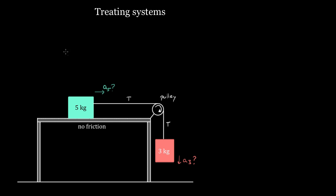We want to find acceleration, and you know how to find acceleration: we're gonna use Newton's second law, so the acceleration in a given direction equals the net force in that direction divided by the mass. Let's pick the five kilogram mass. The acceleration of the five kilogram mass equals the net force on the five kilogram mass divided by its mass. Since this box is accelerating horizontally, we pick the x direction.